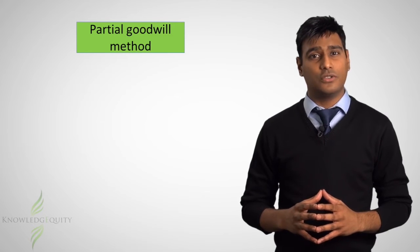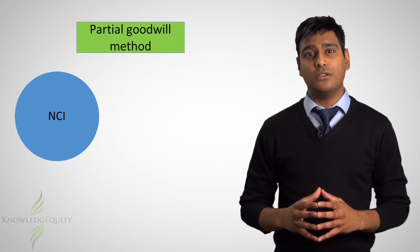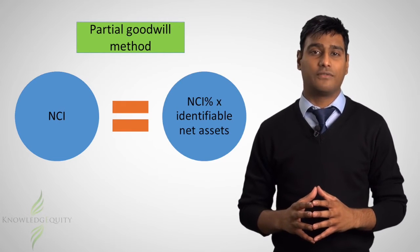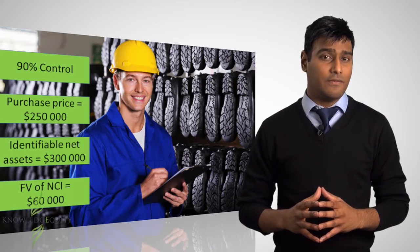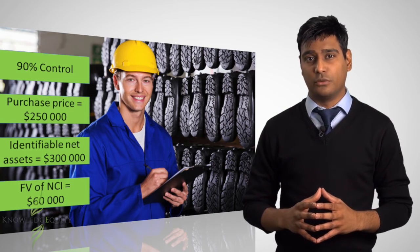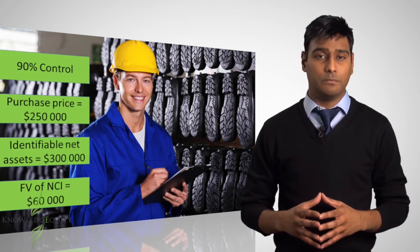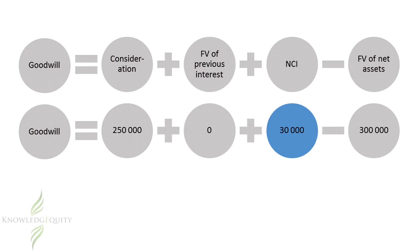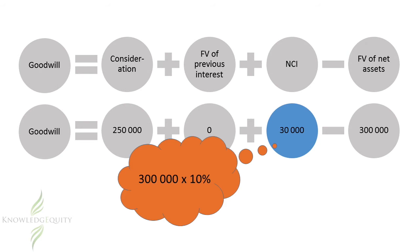If an entity chooses the partial goodwill method, then it would measure non-controlling interest as the NCI percentage of the identifiable net assets. If Alpha Limited adopted the partial goodwill method, what would goodwill be? The values for all other variables would be the same, but NCI in this case would be $30,000, calculated as $300,000 of identifiable net assets times 10%, which is the proportion attributable to the non-controlling interest shareholders.